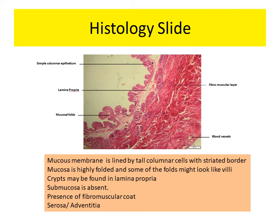This is a slide of the gallbladder at 10x magnification, H&E stain. You can observe that the mucous membrane is lined by tall columnar cells with a striated border. The mucosa is highly folded and the folds may look like villi. Crypts may be found in the lamina propria. The submucosa is absent; instead of muscularis externa, there is a fibromuscular coat, and the last layer is the serosa.